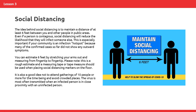The idea behind social distancing is to maintain a distance of at least six feet between you and other people in public areas. Even if a person is contagious, social distancing will reduce the likelihood that they will infect someone else. This is especially important if your community is an infection hotspot, because many confirmed cases so far did not show any outward symptoms. You can estimate six feet by stretching your arms out and measuring from fingertip to fingertip. Please note, this is a rough estimate and a measuring tape should be used when placing social distancing markers on the floor. It is also a good idea not to attend gatherings of ten people or more and to avoid crowded places, as the virus is most often transmitted when an infected person is in close proximity with an uninfected person.